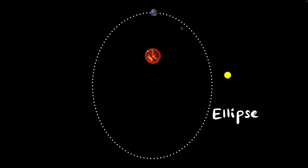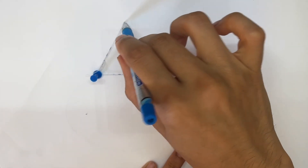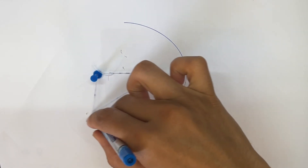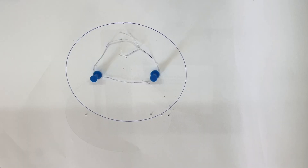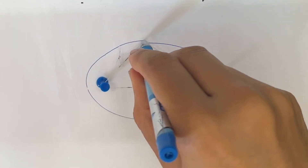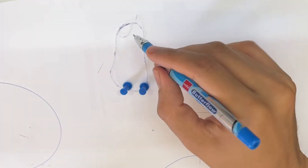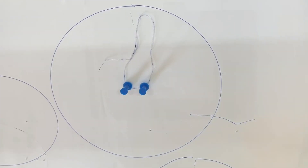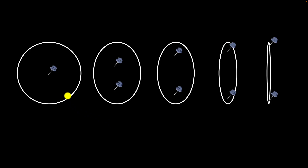You can think of an ellipse as a sort of squished-out circle. To draw an ellipse, take a couple of thumbtacks and put a thread around them. Put your pencil in and draw the shape so that the thread always stays taut — the shape you get is an ellipse. If you keep the thumbtacks farther away, it becomes more elliptical, more squished out. On the other hand, if you keep the thumbtacks closer to each other, it looks more like a circle. So a circle is basically a special case of an ellipse where the two thumbtacks are at the same point.